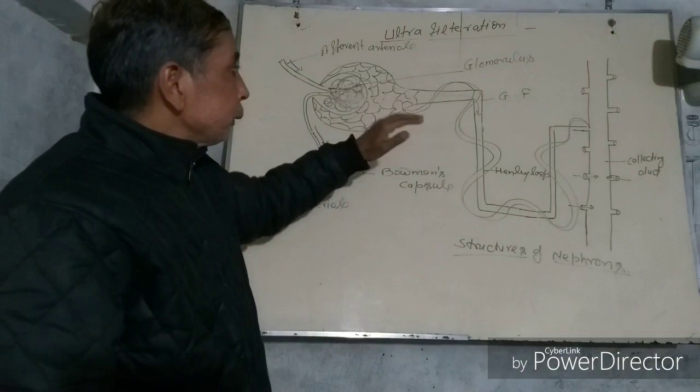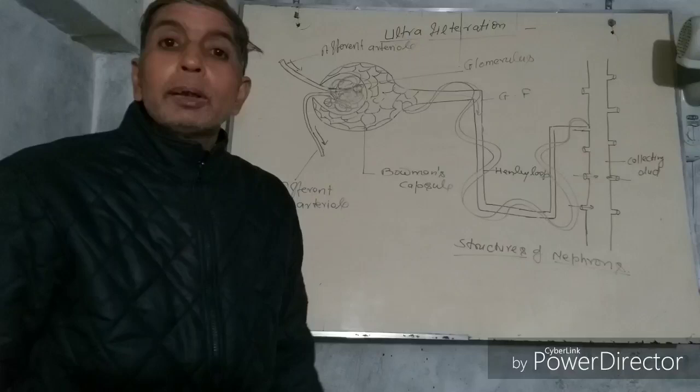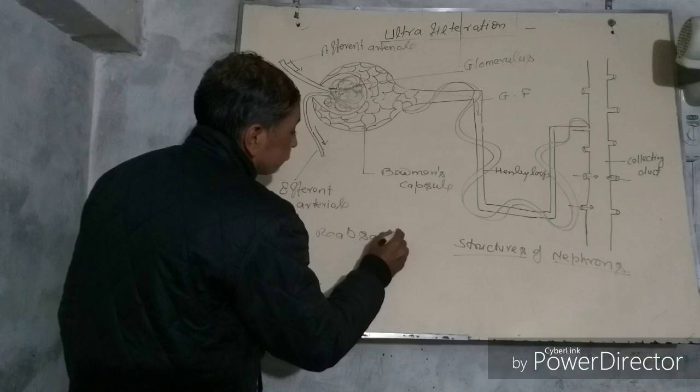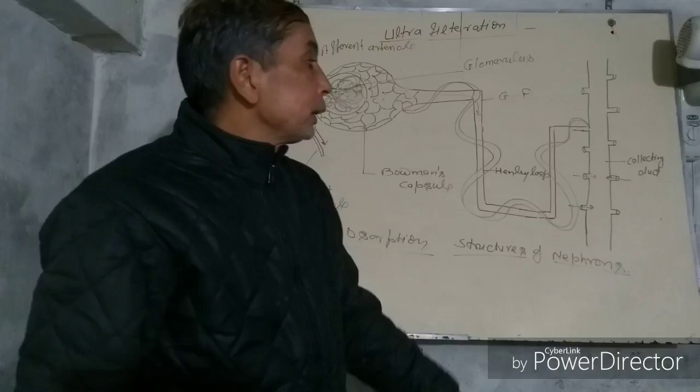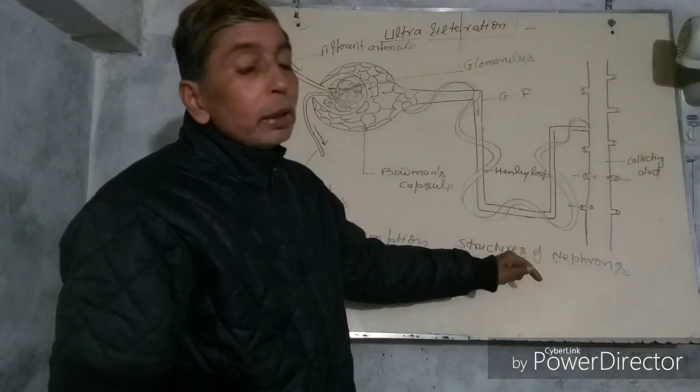There are some useful substances also available in the filtrate, so they are reabsorbed. The process is called reabsorption. The reabsorbed substances are collected in the collecting duct. This collecting duct opens into the ureter.